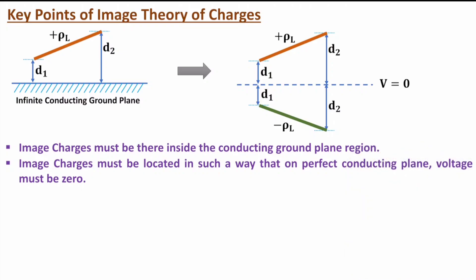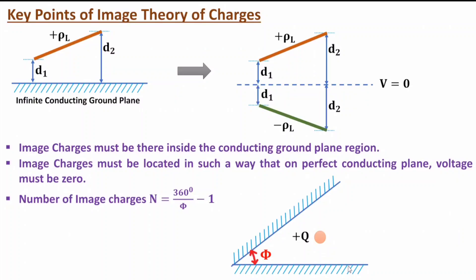The third key point concerns two different infinite conducting ground planes. If the angle between two infinite conducting ground planes is φ degrees, then the number of image charges is given by: (360° / φ°) − 1.